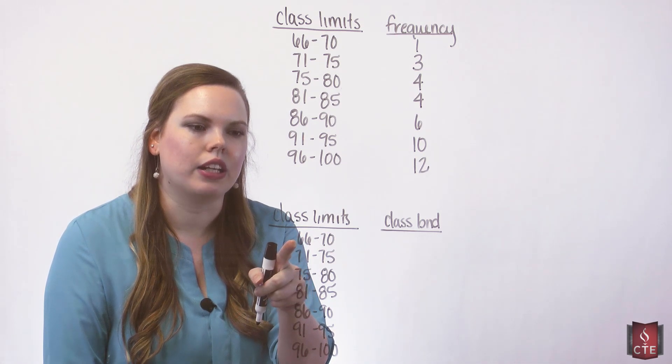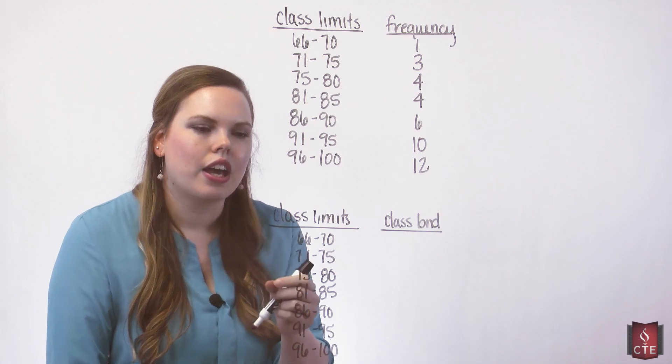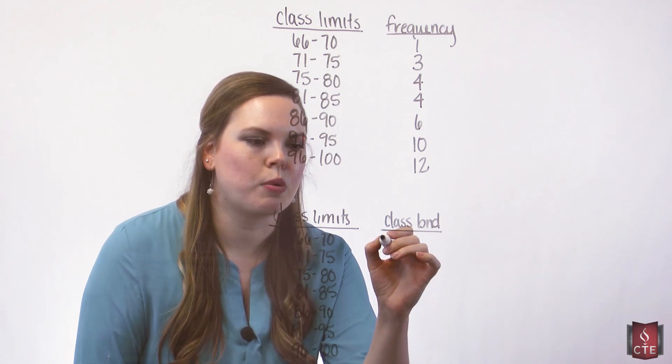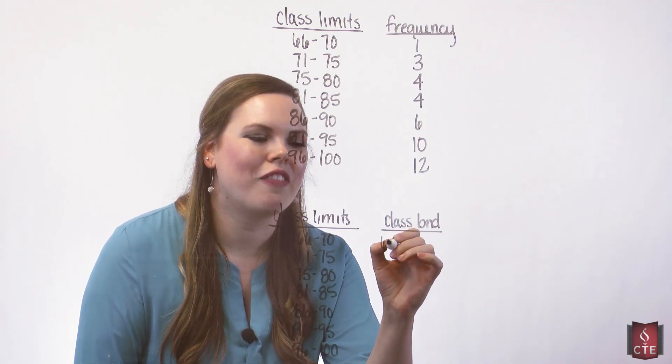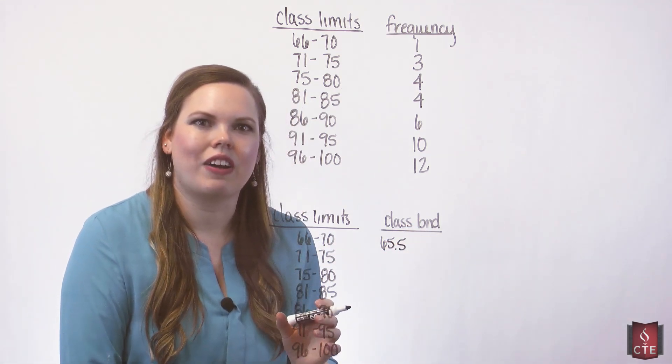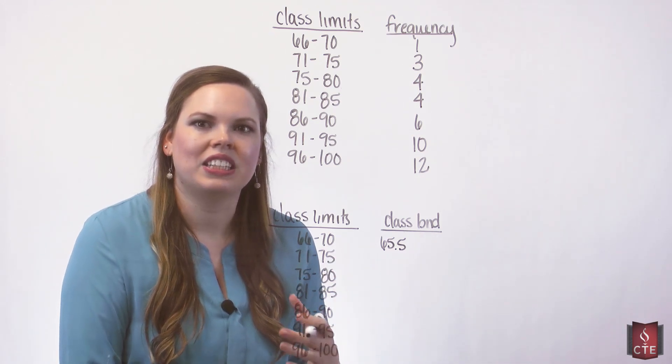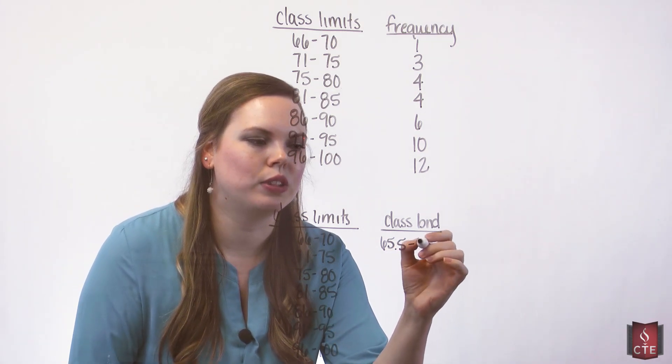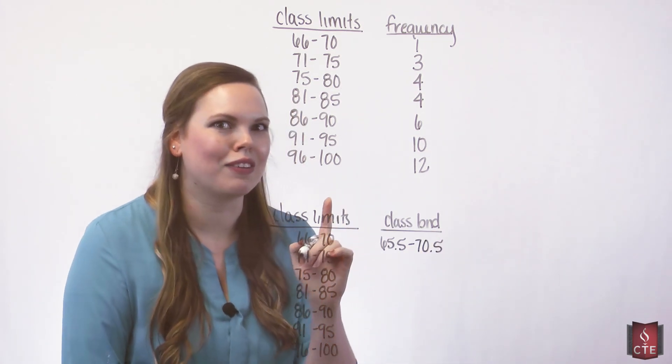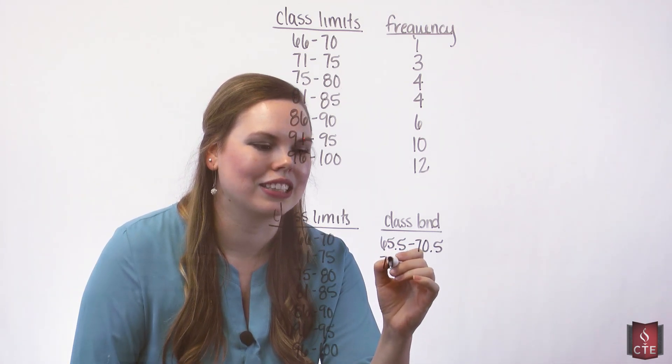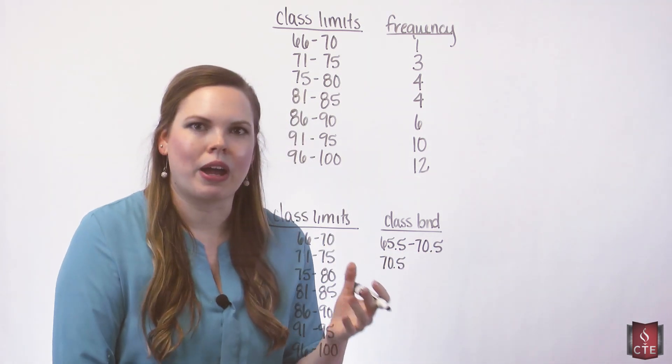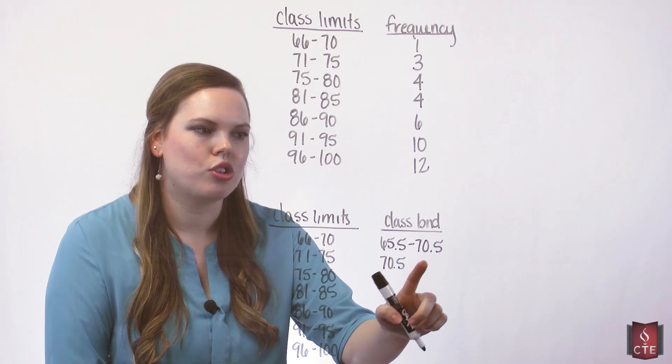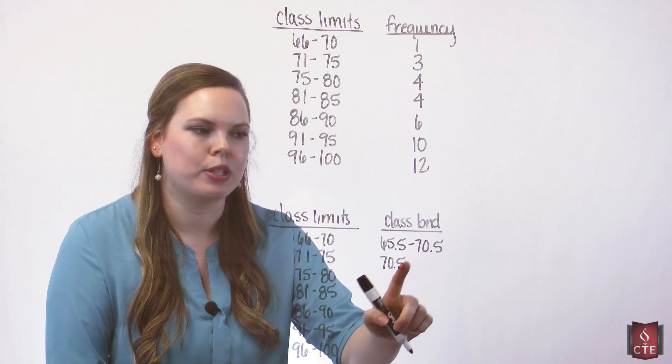And we know that if we have a class limit starting at 66, if we had unrounded data, then this would actually go down to 65.5. Anything at 65.5, 65.6 would be rounded and be put into this class all the way up to 70.5. But not including 70.5 because that would be in our next class. So that's what our boundaries are. They are up to but not including this value. And then it shows that there's no gap in between our classes.